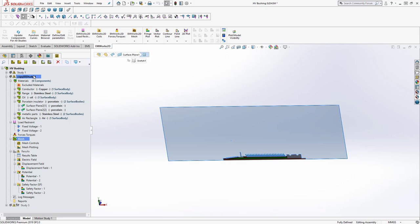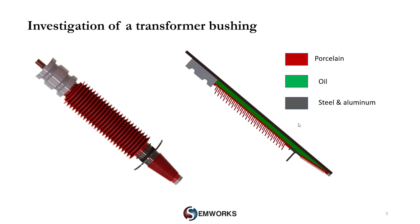Overall, the main steps to define a study using EMWorks2D are: start with a 3D geometry and use the 2D simplification feature to generate 2D geometry, define the coordinate system that defines your symmetry, create a study, apply materials, apply voltages or floating conductors or charges, generate your mesh, then run your study. Now back to our presentation — our bushing example is made of insulation porcelain, oil as insulation between the conductor and the porcelain, and some conductor parts which are mainly steel for the flange and aluminum for the main conductor.